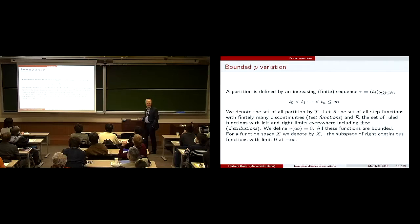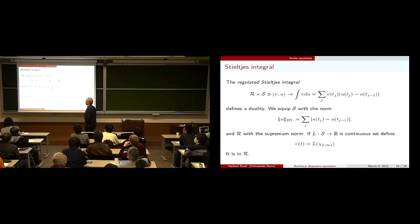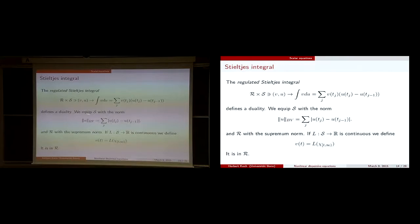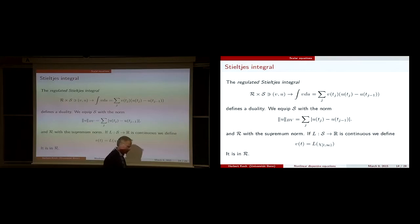We look at something which could be called the regulated Stieltjes integral. We take the function u, which is a step function — right continuous — and the regulated functions, and we map them to the integral V du, which has little choice but to be understood in this way. There is a small question of left versus right continuity, but that's the one we take.